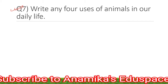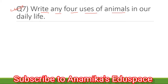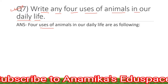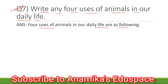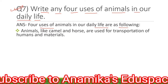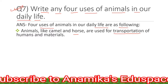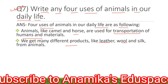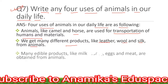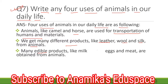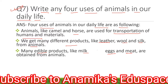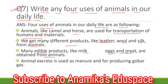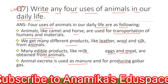Coming to question number 7: Write any 4 uses of animals in our daily life. The answer goes as: Animals like camel and horse are used for transportation of humans and material. We get many different products like leather, wool, and silk from animals. Many edible products like milk, eggs, and meat are obtained from animals. Animal excreta is used as manure and for producing gobar gas.